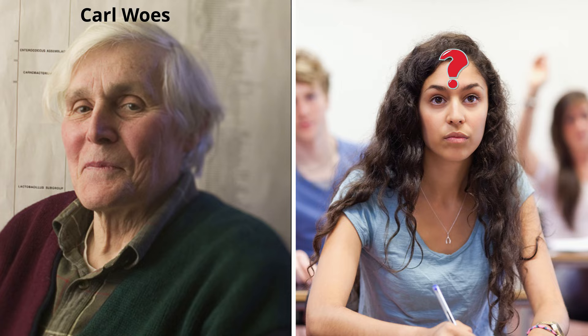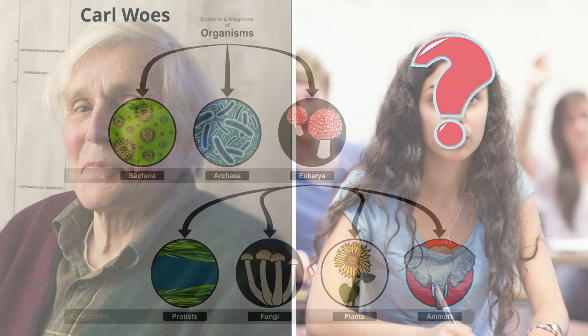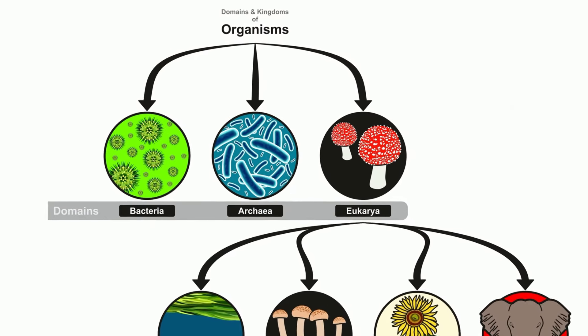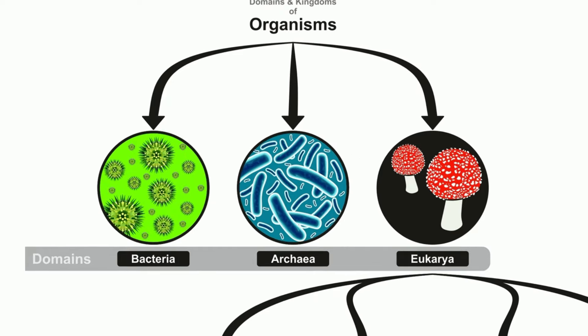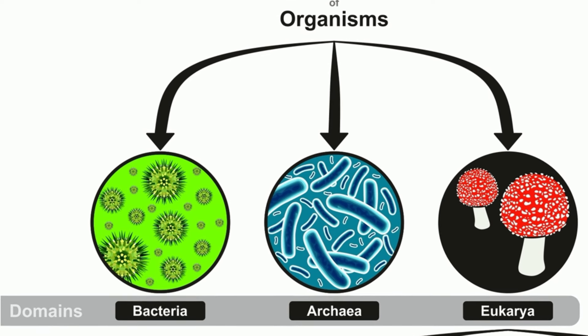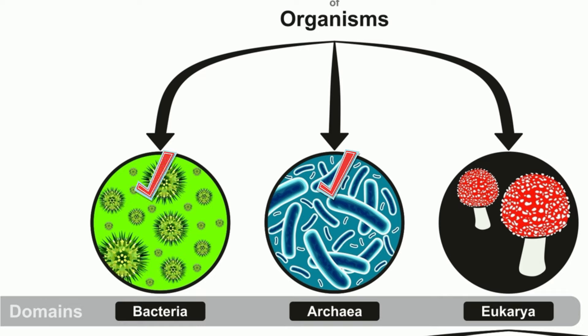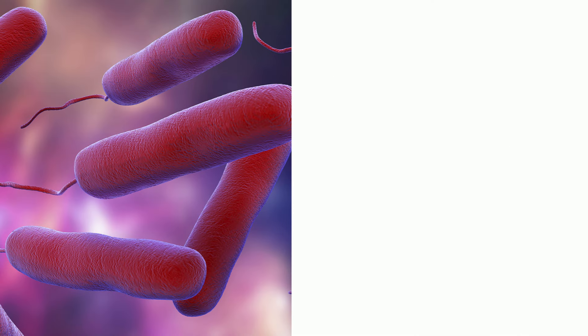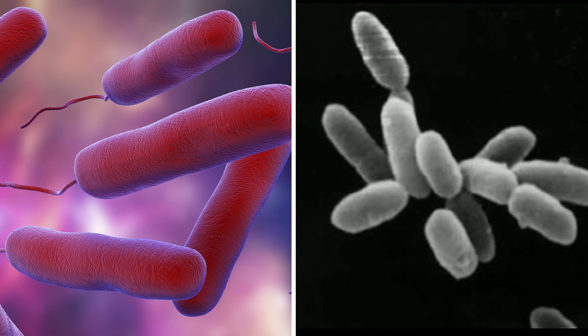If you mention the name Carl Woese to most biology students, you may draw a blank stare. In reality, modern classification had a paradigm shift and added a third domain thanks to his work. He was the first to show how archaea organisms are not bacteria nor eukaryote, but a completely different domain of organisms. Let's take a look at how bacteria and archaea are different.